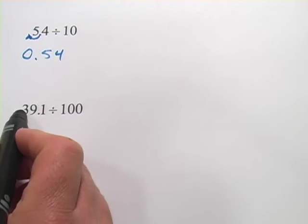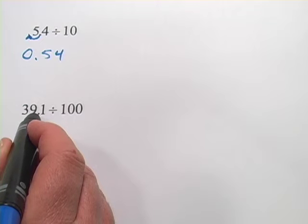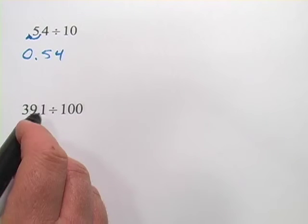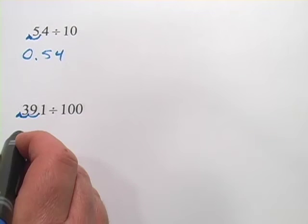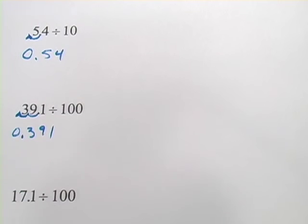Next one, we're dividing by 100. We've got 39.1. Now, when you divide by 10, you move the decimal point to the left one place. When you divide by 100, you move the decimal place to the left two spaces. So this is going to be 0.391, and then we'll put that 0 out front.